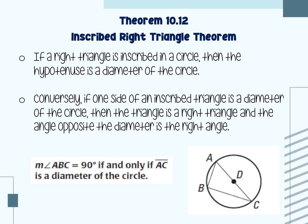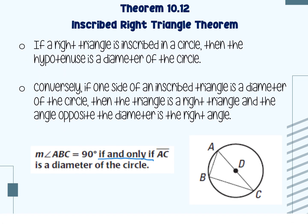The next one is called the inscribed right triangle theorem. It states that if a right triangle is inscribed in a circle, then the hypotenuse is the diameter of the circle. Conversely, if one side of an inscribed triangle is a diameter of the circle, then the triangle is a right triangle and the angle opposite the diameter is the right angle. So they could either give you that angle ABC is a right angle, and you state that AC is the diameter, or if they tell you AC is the diameter, then angle ABC is 90 degrees.